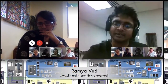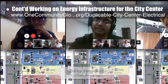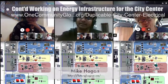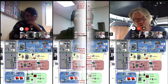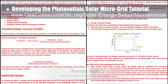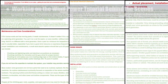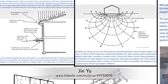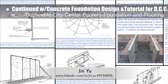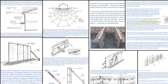Ramya Voodi, electrical engineer, and Shubham Agrawal, electrical engineer, continued their work on the City Center electrical design and tutorial with Mike Hogan, automation systems developer and business systems consultant. Here are pictures from the weekly collaborative call continuing to discuss and refine the overall layout, along with pictures of Ramya's work developing the PV solar microgrid tutorial and Shubham's work developing the wind power tutorial. Jin Yu, structural engineering designer, completed her 15th week on the City Center Footers, Foundation, and Flooring tutorial — this week writing more content for the waterproofing and workflow sections.